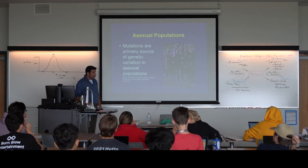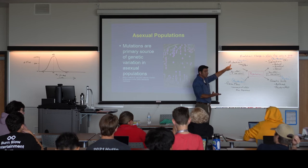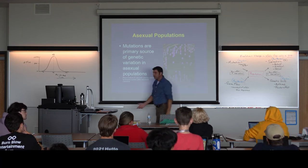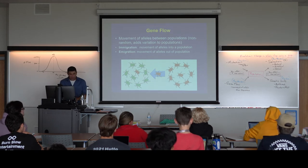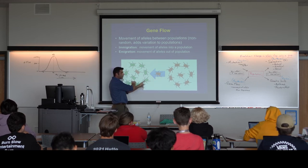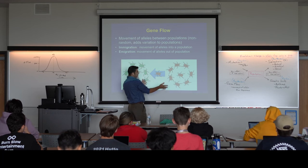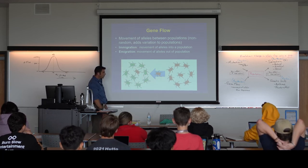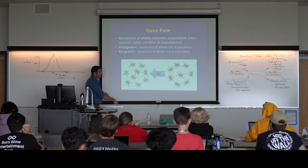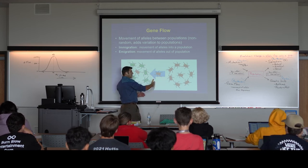Mutations are copying errors. In asexually reproducing species, mutations are the only source of variation. In sexually reproducing species, there are individuals moving into and out of populations as well. Gene flow is the glue that keeps two populations the same — if there's movement of alleles back and forth, eventually a green version will be shared, and we'll have a population of green and brown beetles. You can also see how gene flow adds variation to a population, and since physical barriers can make this more difficult, it's a non-random process.